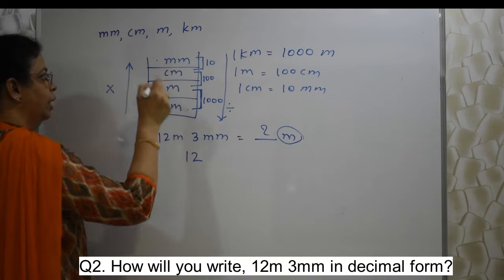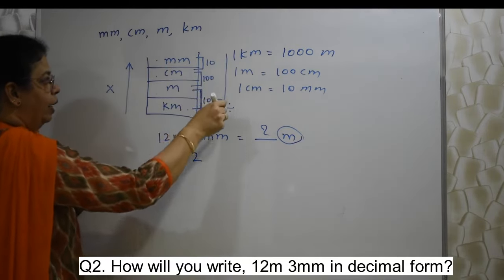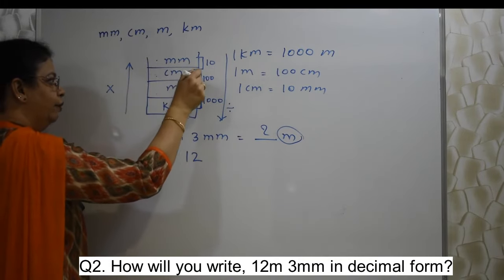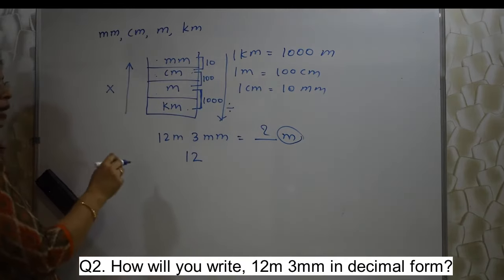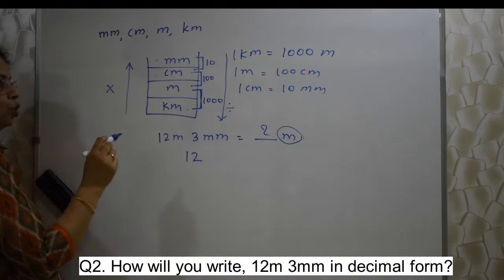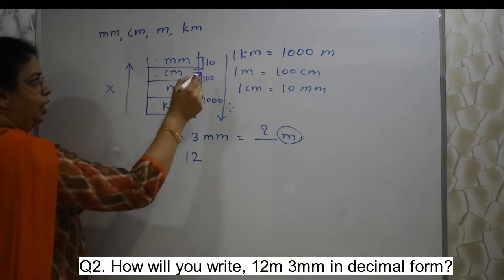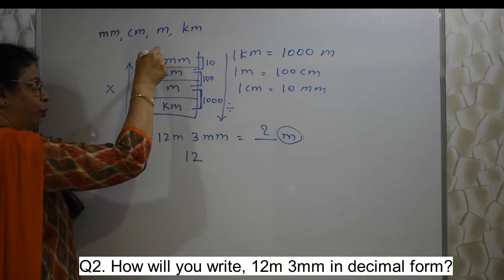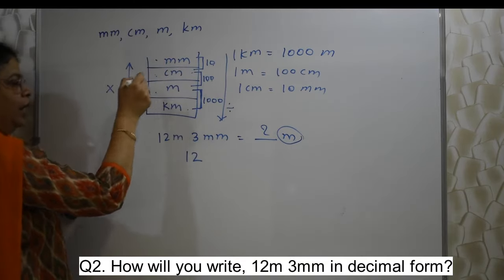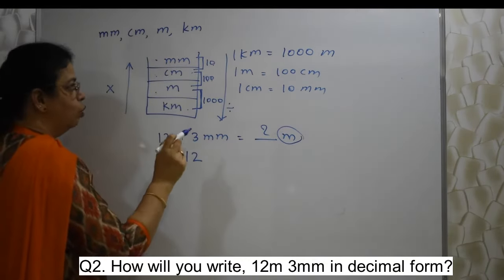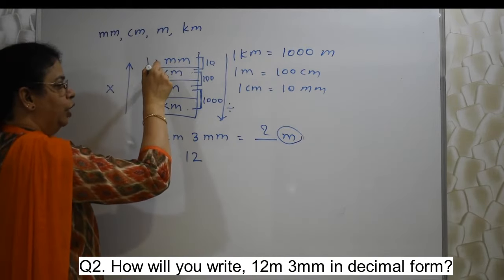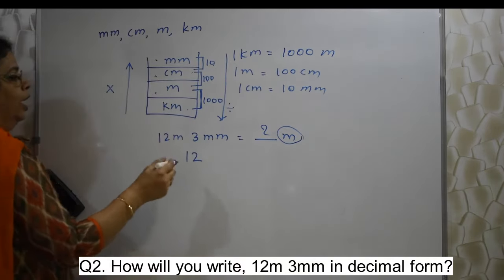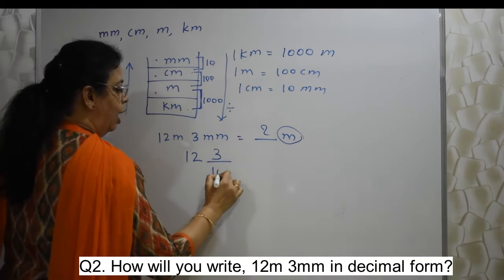First I need to go here. Millimeter to centimeter, I will have to divide by 10. Then centimeter to meter, I will have to divide by 100. 10 and 100, so it is 1000. 3 zeros. So from directly, if I want to come from millimeter to meter, I will have to divide by 1000. Because from here to here, I need to divide by 1000. Here to here, I need to divide by 100. So in short, I need to divide 3 by 1000.